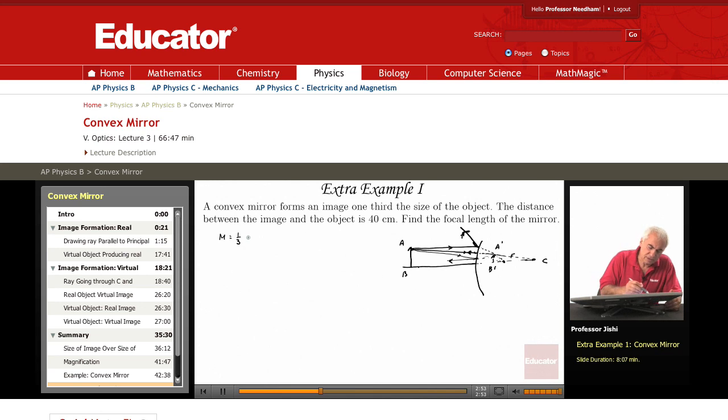This means that minus Q over P is one third, which means that Q is minus P over three.